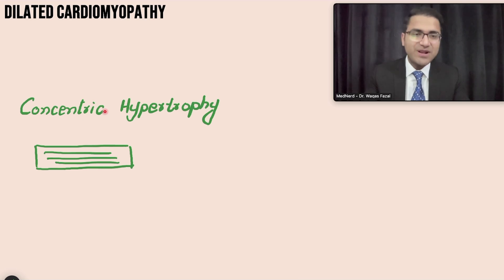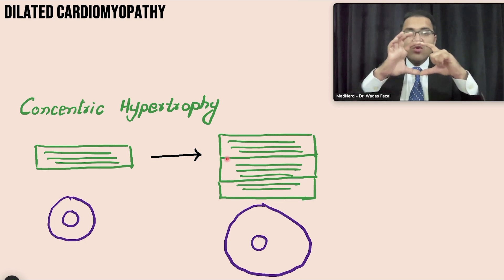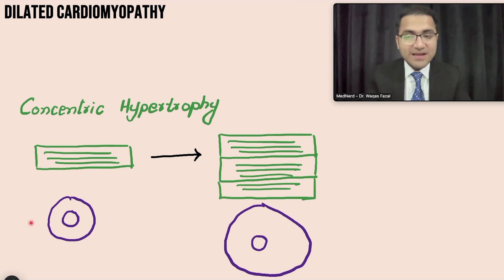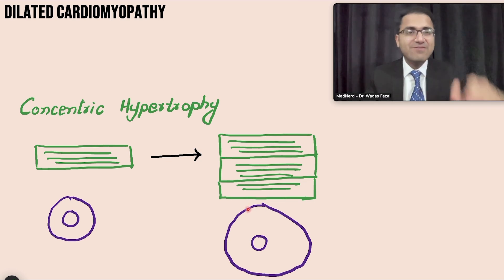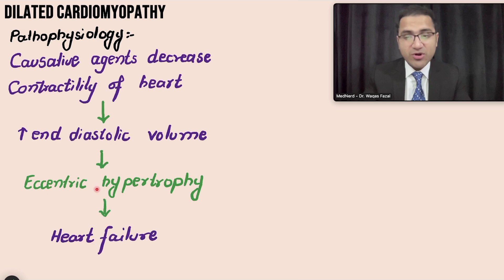In concentric hypertrophy, sarcomeres are added in parallel, which increases the width of the tissue rather than the length. This increases wall thickness and results in hypertrophic cardiomyopathy — explained in detail in a separate video. So in dilated cardiomyopathy, eccentric hypertrophy takes place, and that eccentric hypertrophied heart cannot contract, resulting in heart failure.